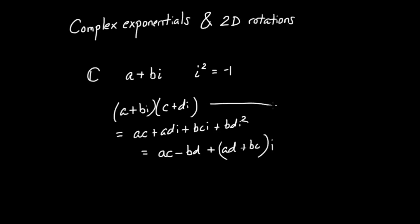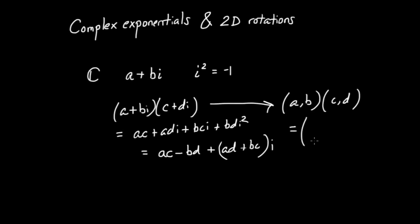I could be a bit more formal. Instead of writing numbers in the form A plus Bi, I could write them in vector or ordered pair form as just AB instead of A plus Bi, and similarly CD instead of C plus Di. The new complex number generated is going to have in the first component AC minus BD, and the new imaginary part AD plus BC. So we have already two ways of viewing the complex numbers: numbers of the form A plus Bi, and ordered pairs that look like AB or CD.